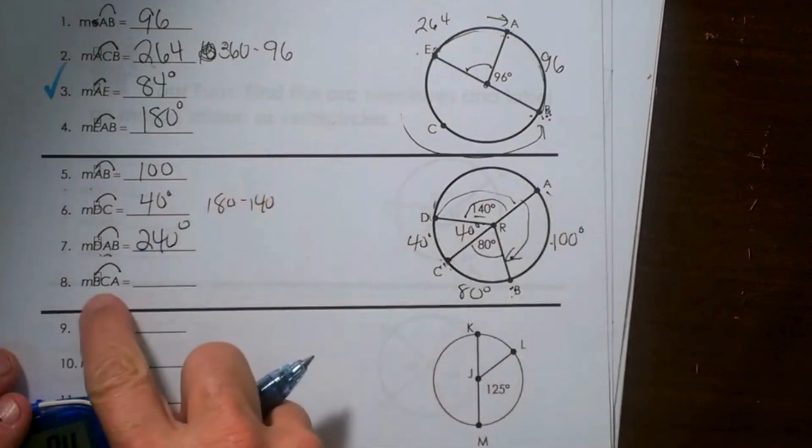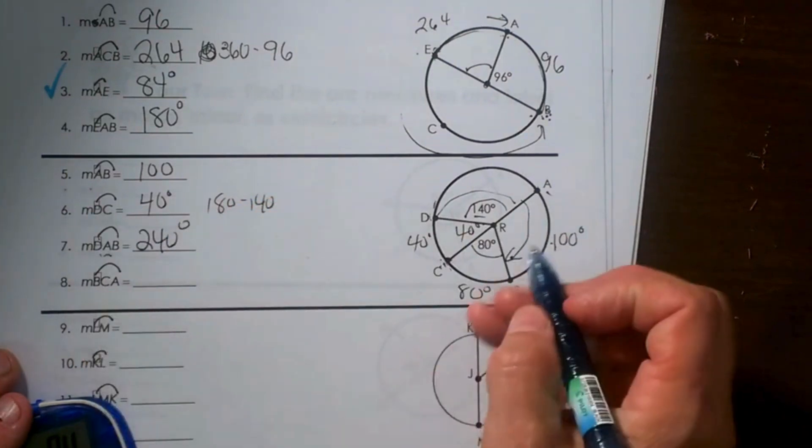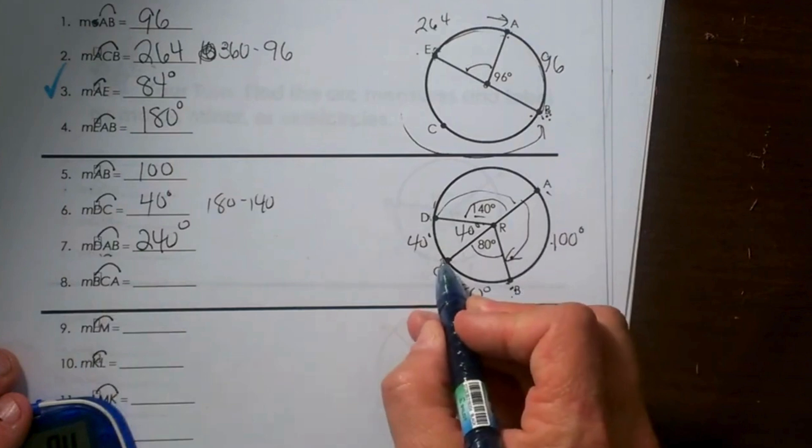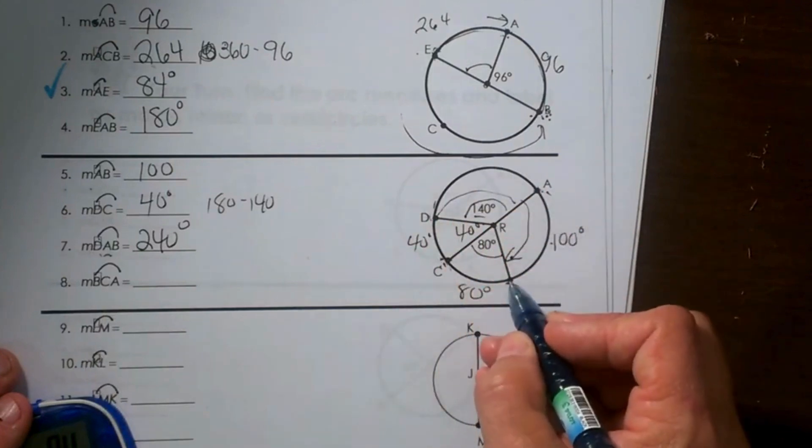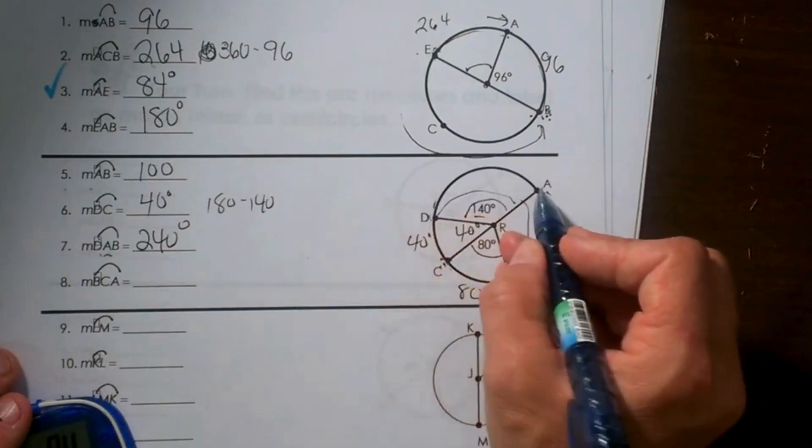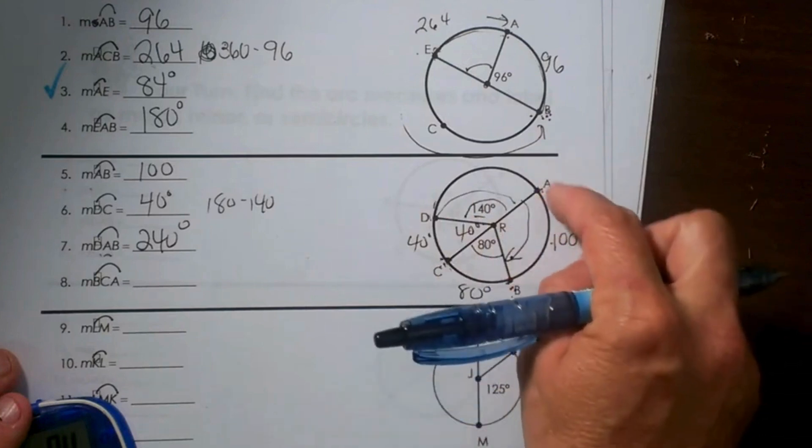Let's see, B, C, A - B through C to A. So this time we are starting at B and going through C and going to A, so it is everything but this section.